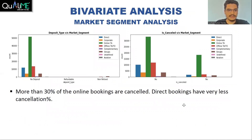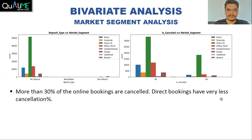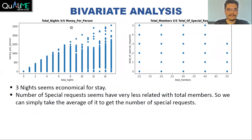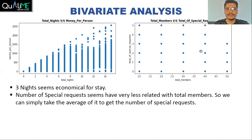The market segment analysis shows that more than 30% of online bookings are cancelled, while direct marketing has comparatively fewer cancelled bookings. The plot of total nights versus money per person shows that money spent per person is directly proportional to total nights stayed, which is quite obvious. The relation between total members versus total special requests does not show a clear picture — we visualize the same thing in the correlation heat map.